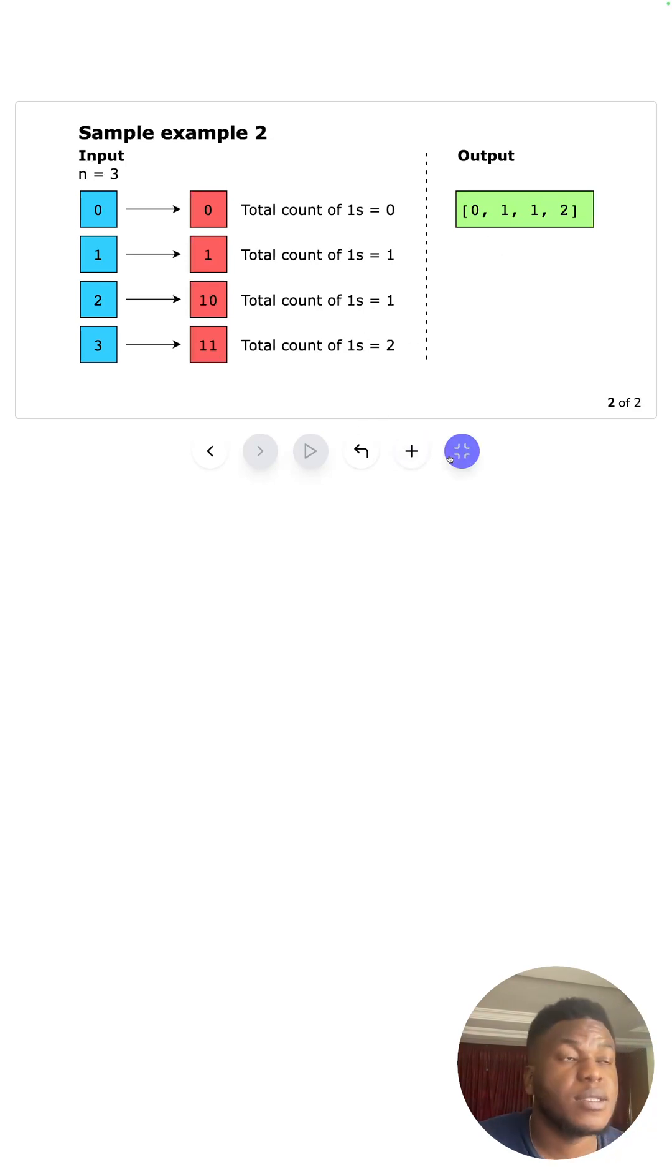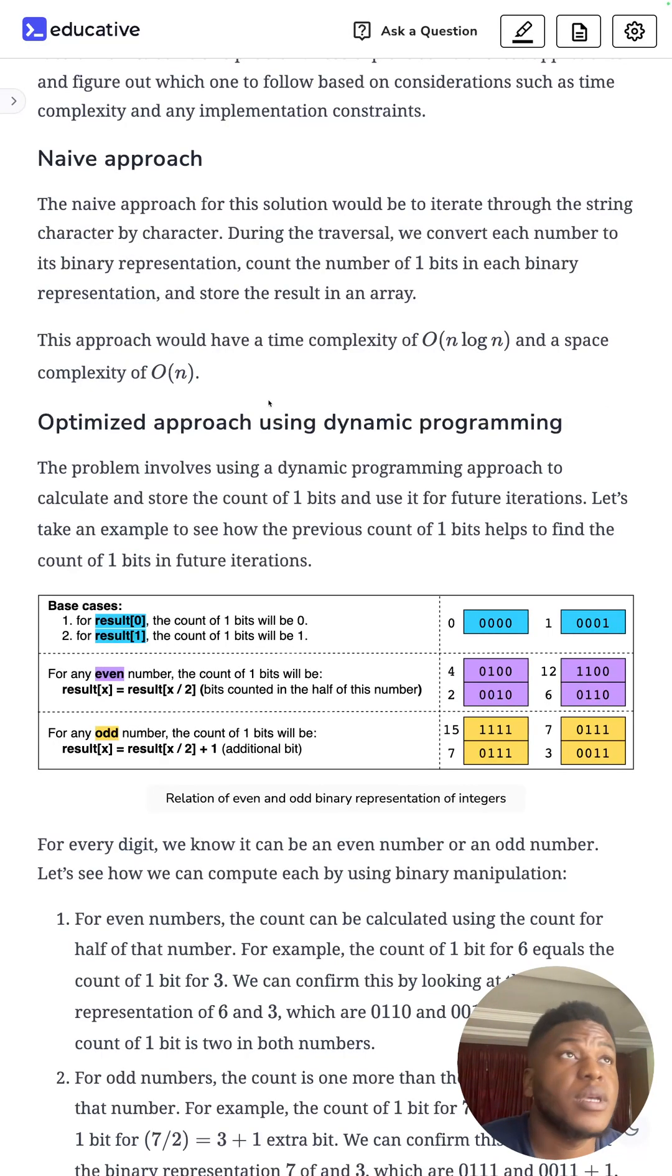For the naive approach to this problem, you iterate through the string character by character, convert each number to its binary representation, count the number of one bits in each binary representation, and store the results in an array. That's O(n log n), which is actually very tolerable, and space complexity of O(n).